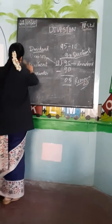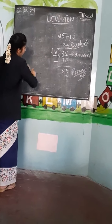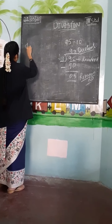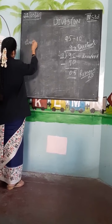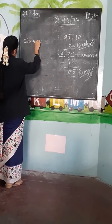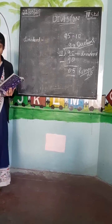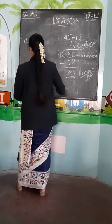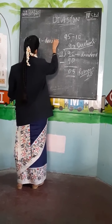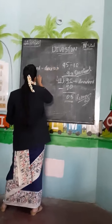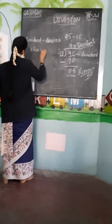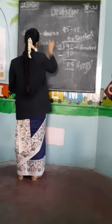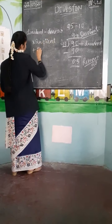How will you check whether it is correct or wrong? You have to check using the formula: Dividend equals Divisor into Coefficient plus Remainder.